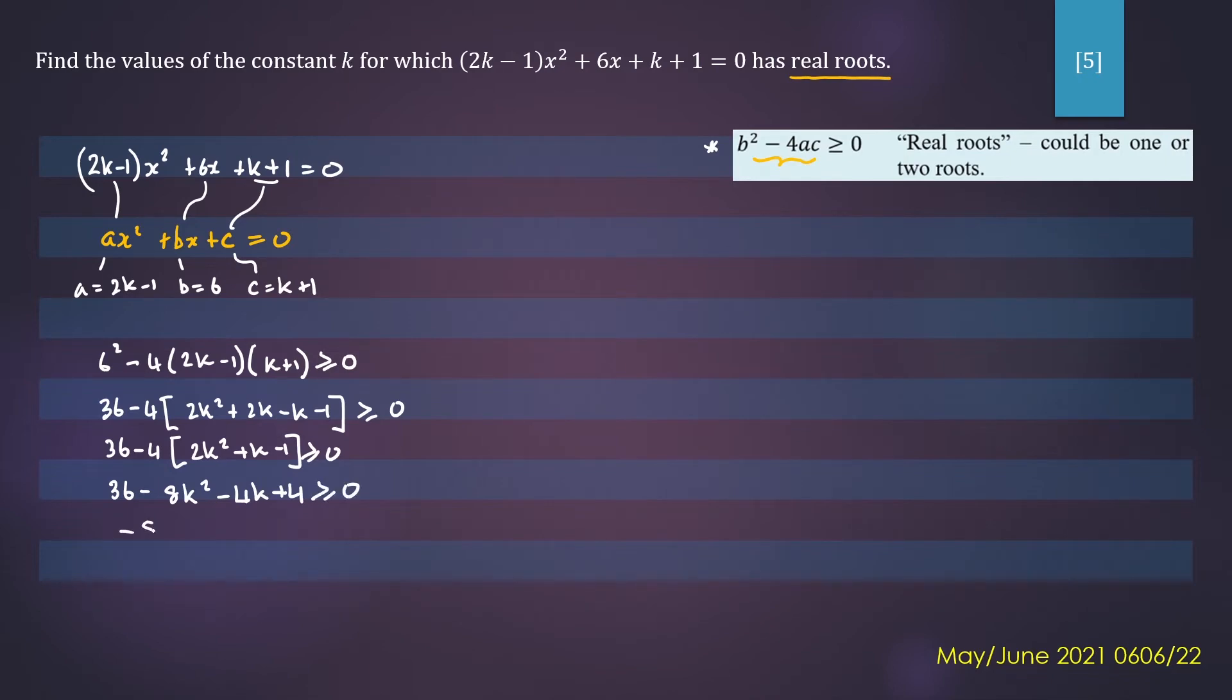And that will give us -8k² - 4k + 40 ≥ 0.